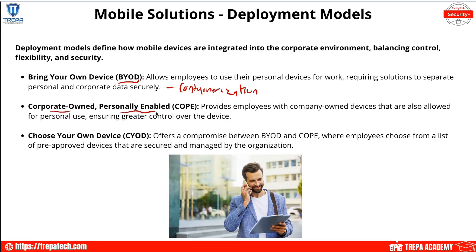Corporate Owned Personally Enabled (COPE) provides employees with company-owned devices that are also allowed for personal use. Essentially, we give employees an iPhone for work, but if they feel like installing social media apps or texting family and friends, that's okay — as long as it's used appropriately during work hours. There will be a lot of paperwork: AUPs and DAs to sign because it's a corporate-owned device.